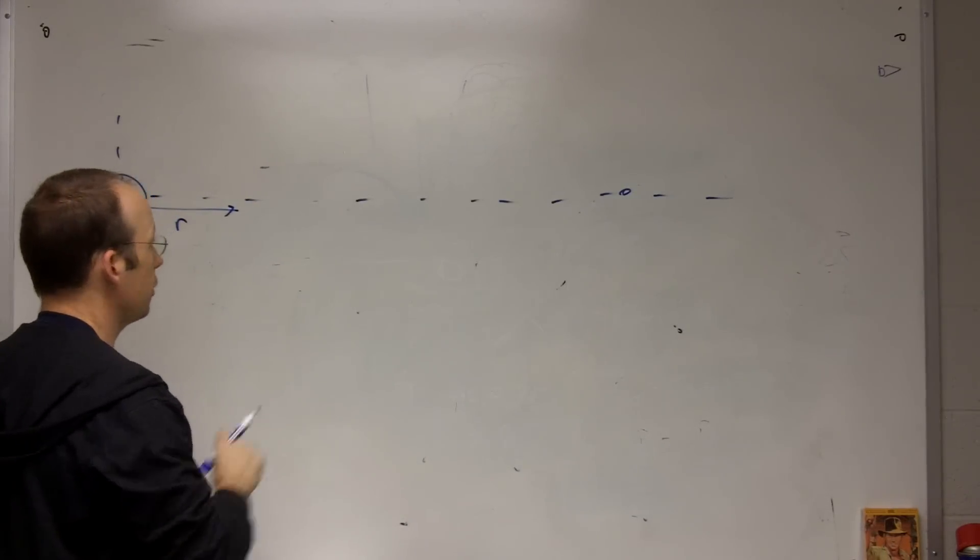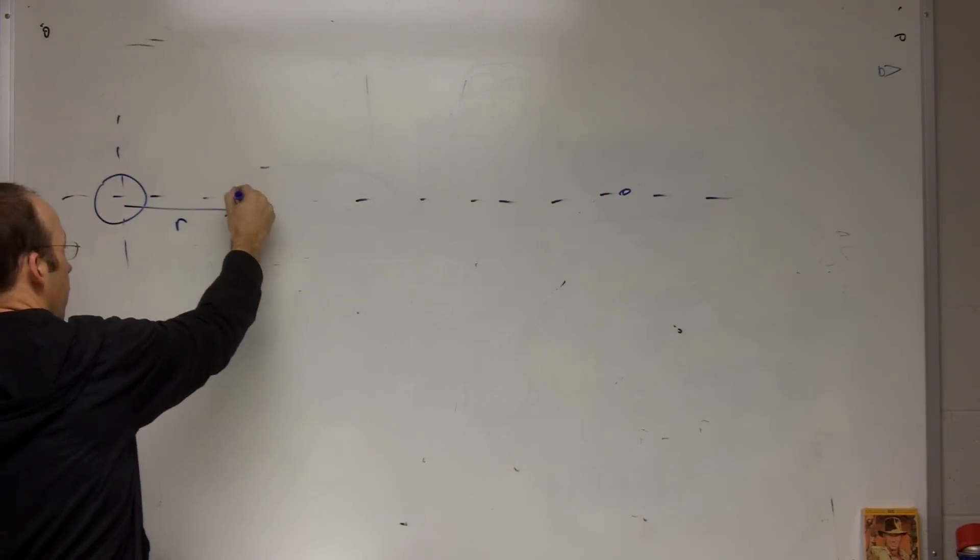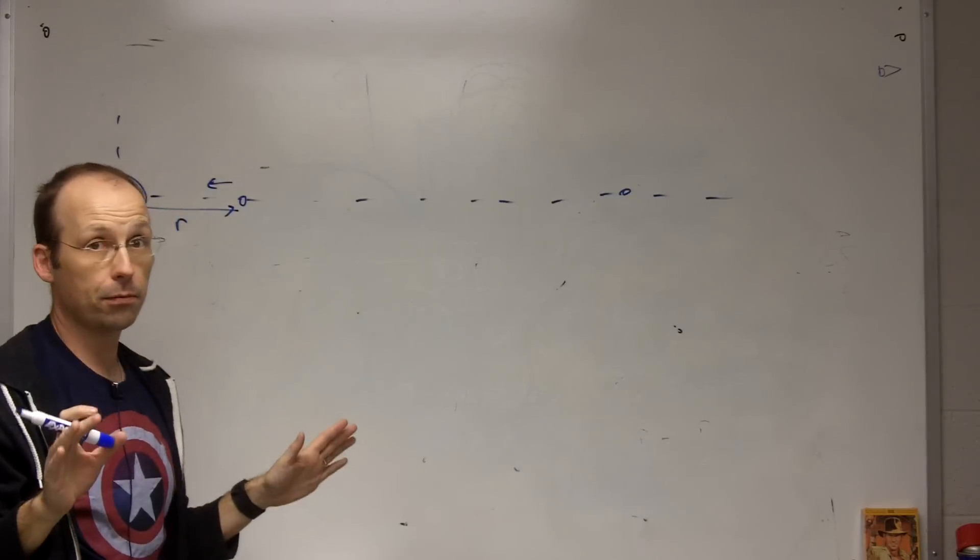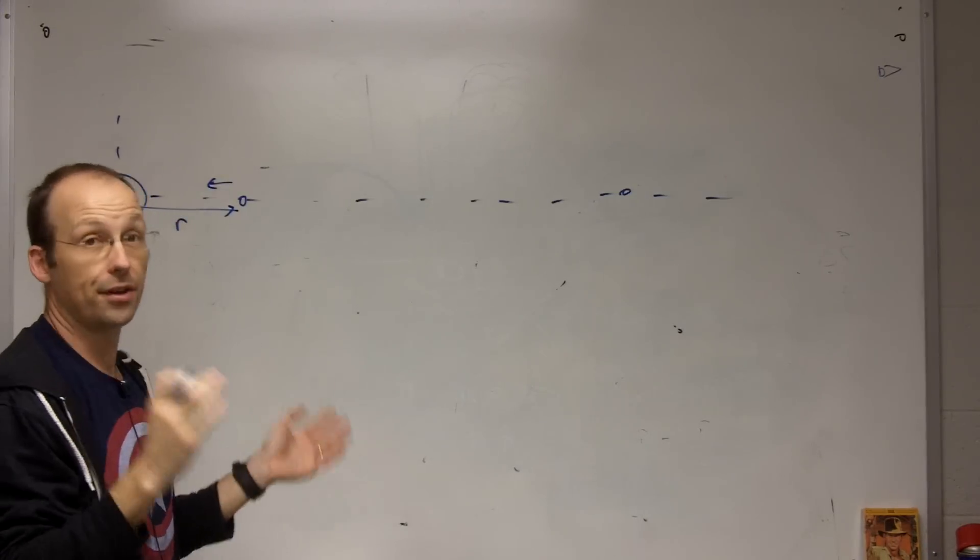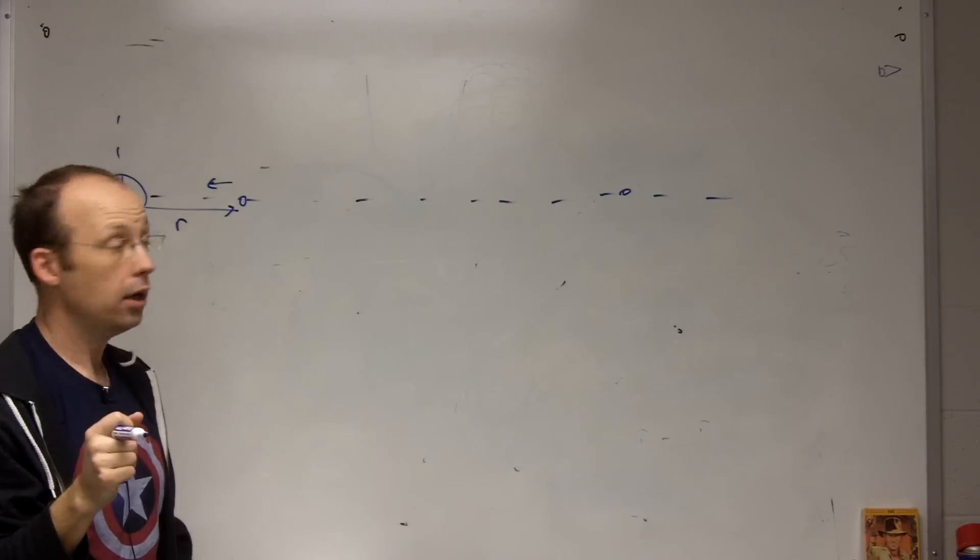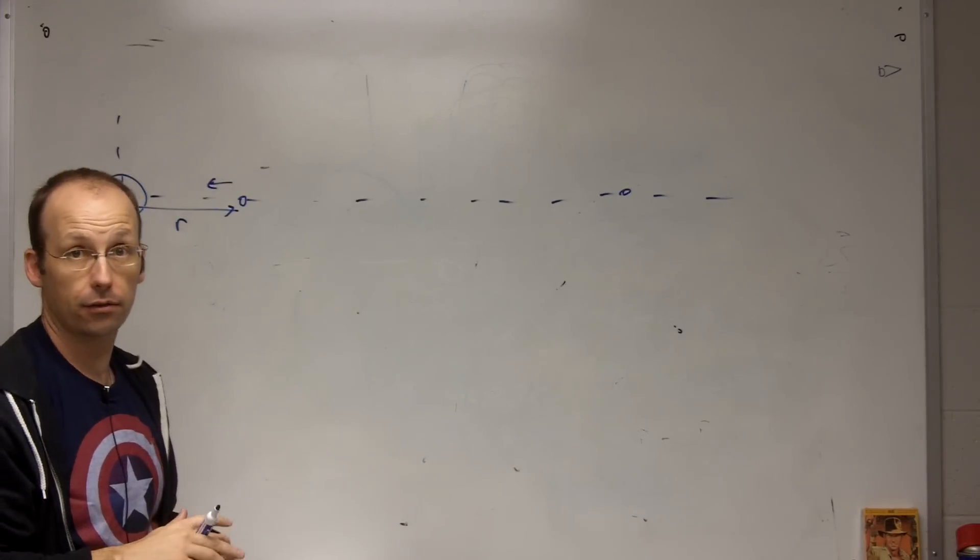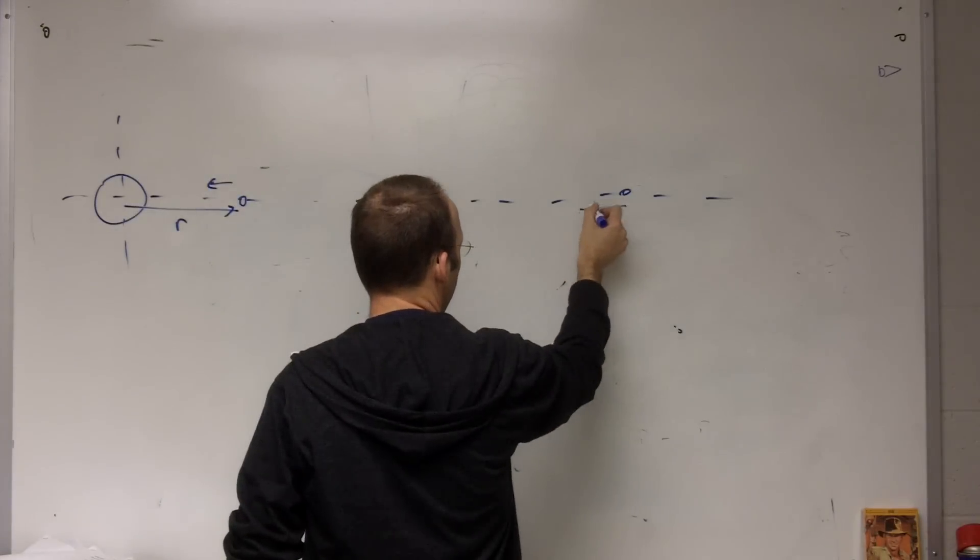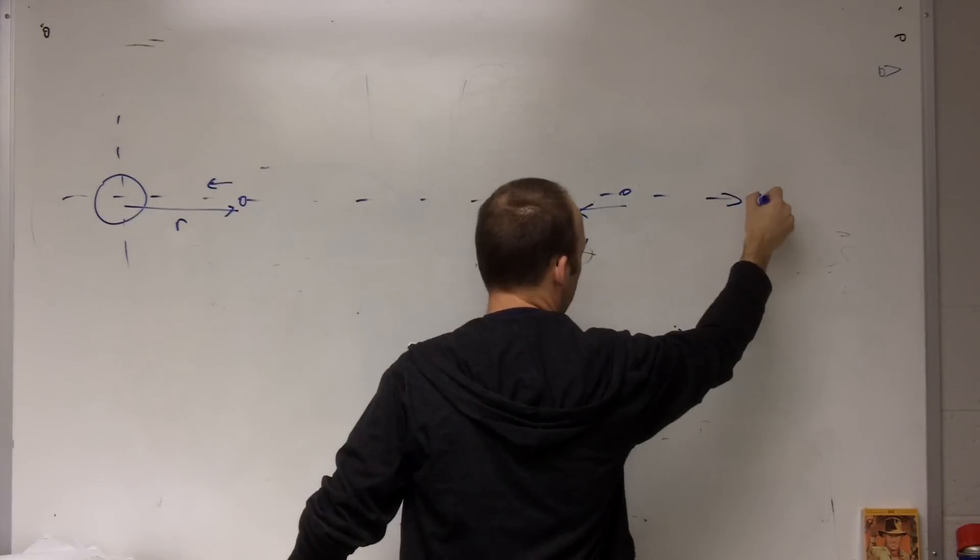So it starts at infinity and it ends over here at r with some speed. Momentum principle isn't very good for this because I don't know the time and I can't even use the average velocity like I did before because the force isn't constant. So that's no good. I'm going to have to use the work energy principle. So here I have, let me call this the x direction.